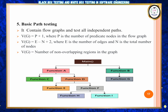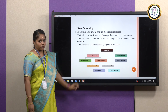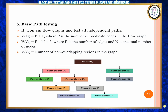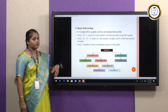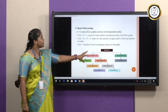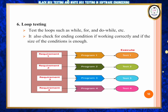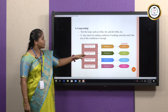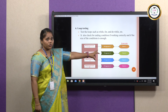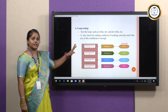Next, basic path testing. Under basic path testing, all independent paths are identified. The cyclomatic complexity V(G) is found using P plus 1, where P is the number of predicate nodes, or using E minus N plus 1, where E is the number of edges and N is the total number of nodes. Next, loop testing covers for loops, while loops, and do-while loops, checking that ending conditions are correctly handled with appropriate test cases for each requirement.